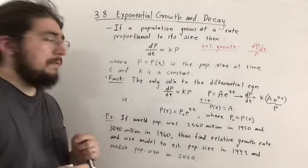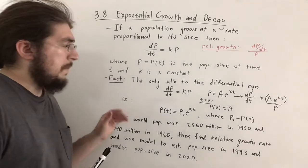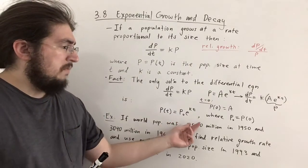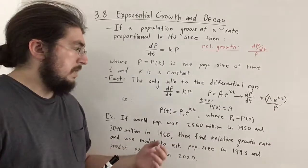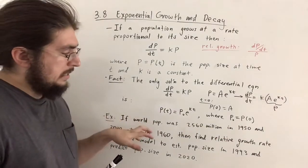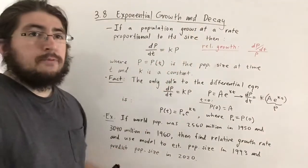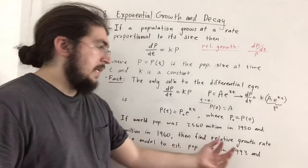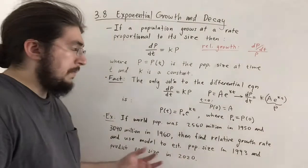Now here's an example. If the world population was 2,560,000,000 in 1950 and 3,040,000,000 in 1960, then find the relative growth rate. Use the model to estimate population size in 1993 and predict population size in 2020.